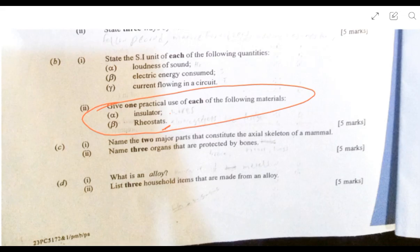Name two major parts that constitute the axial skeleton of a mammal. The axial skeleton is the central portion of the human skeleton and consists of several major parts. They protect very vital organs. Name three main organs that are protected by bones: the brain, the spinal cord, and the lungs. The skull protects the brain, the vertebral column protects the spinal cord, and the ribs protect the lungs.